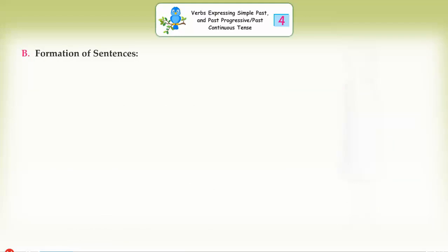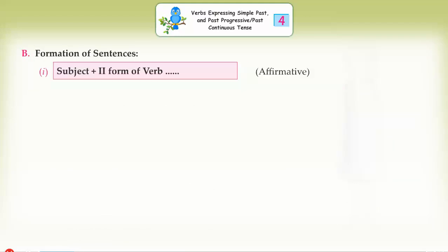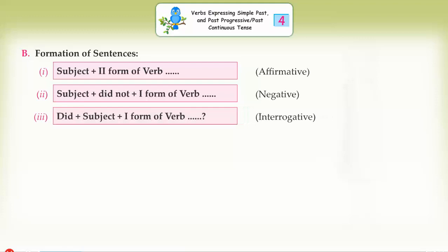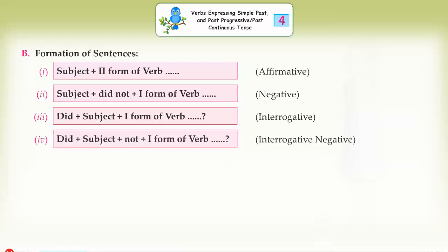Formation of sentences. One: Subject plus second form of verb — Affirmative. Two: Subject plus did not plus first form of verb — Negative. Three: Did plus subject plus first form of verb — Interrogative. Four: Did plus subject plus not plus first form of verb — Interrogative negative.